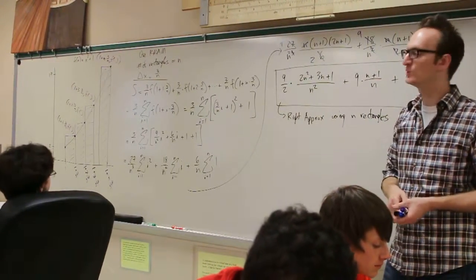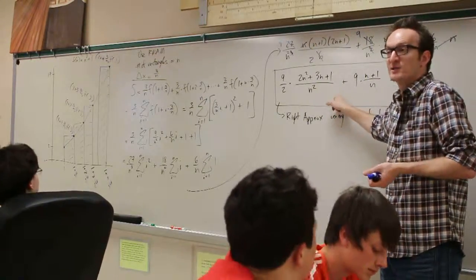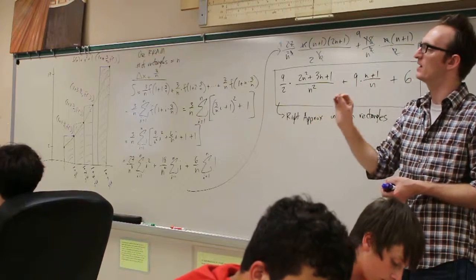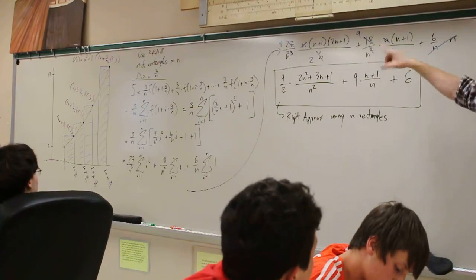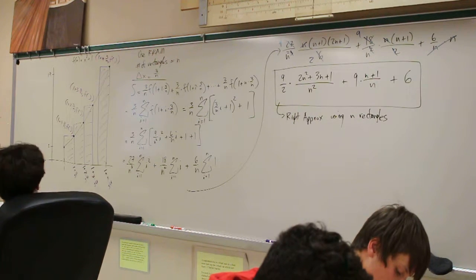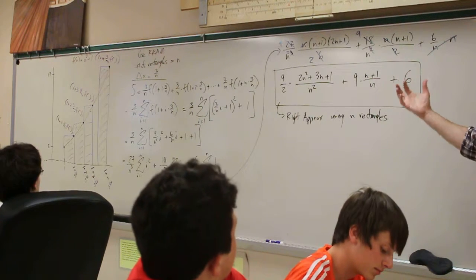Those of you who said a thousand, I could plug a thousand in for n. If I plug a thousand in for n, that will give me the area under the curve as approximated by a thousand rectangles, using a right n-point approximation. But, the more bold among us who wanted to use an infinite number of rectangles, what do we do?